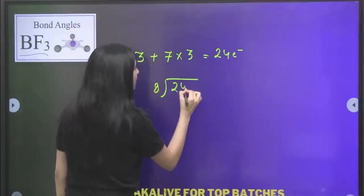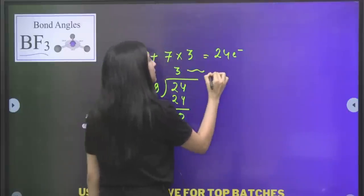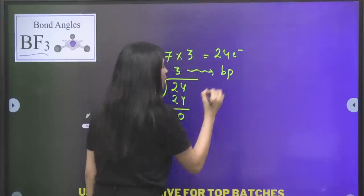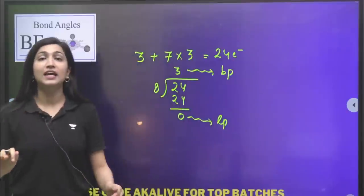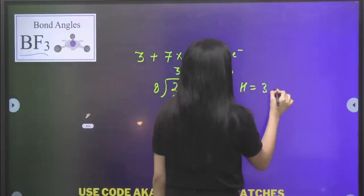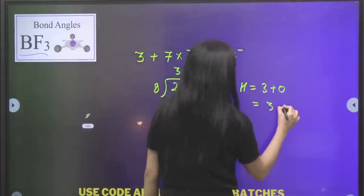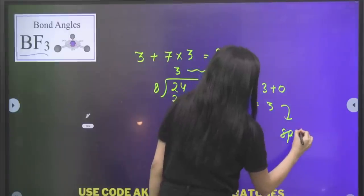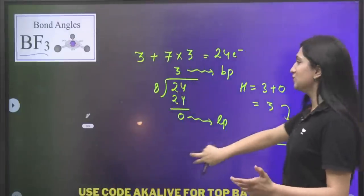Then your quotient will be 3, and the remainder value will be 0. This means you have three bond pairs and zero lone pairs. That simply means, what will be the hybridization of this molecule? 3 plus 0, which is equal to 3. And then the hybridization will be SP2. For this molecule, the correct hybridization will be SP2.